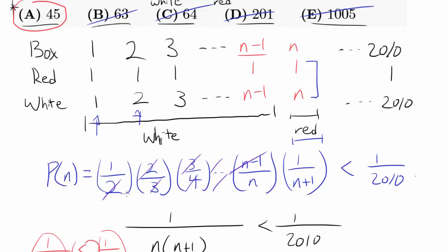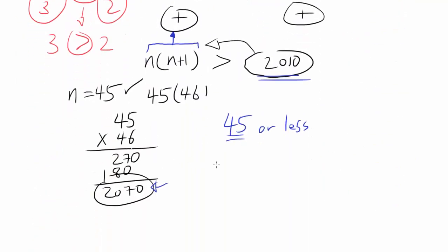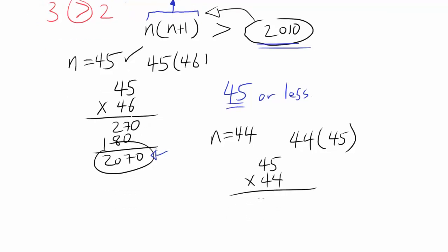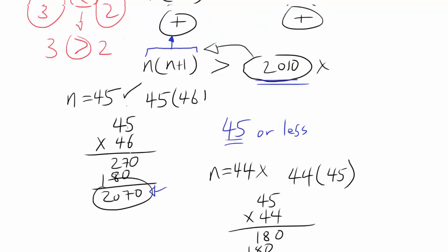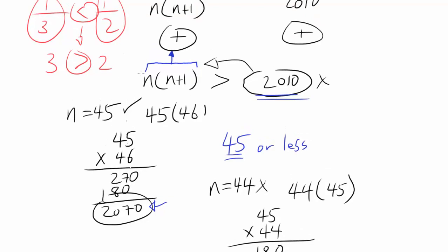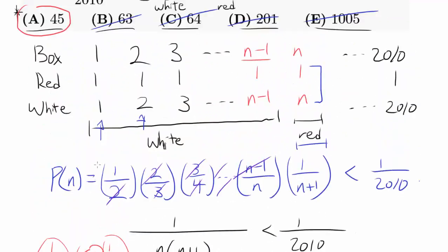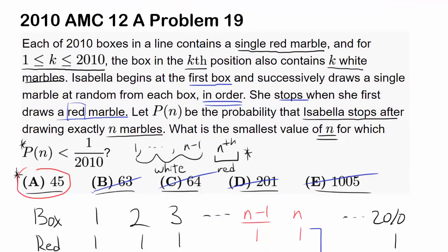But for the sake of completeness, let's try 44. 44 times 45 is 1980, which is less than 2010. So 44 doesn't work out. This inequality is valid starting at n equals 45. So 45 is the smallest n that satisfies this inequality, and our answer is A.